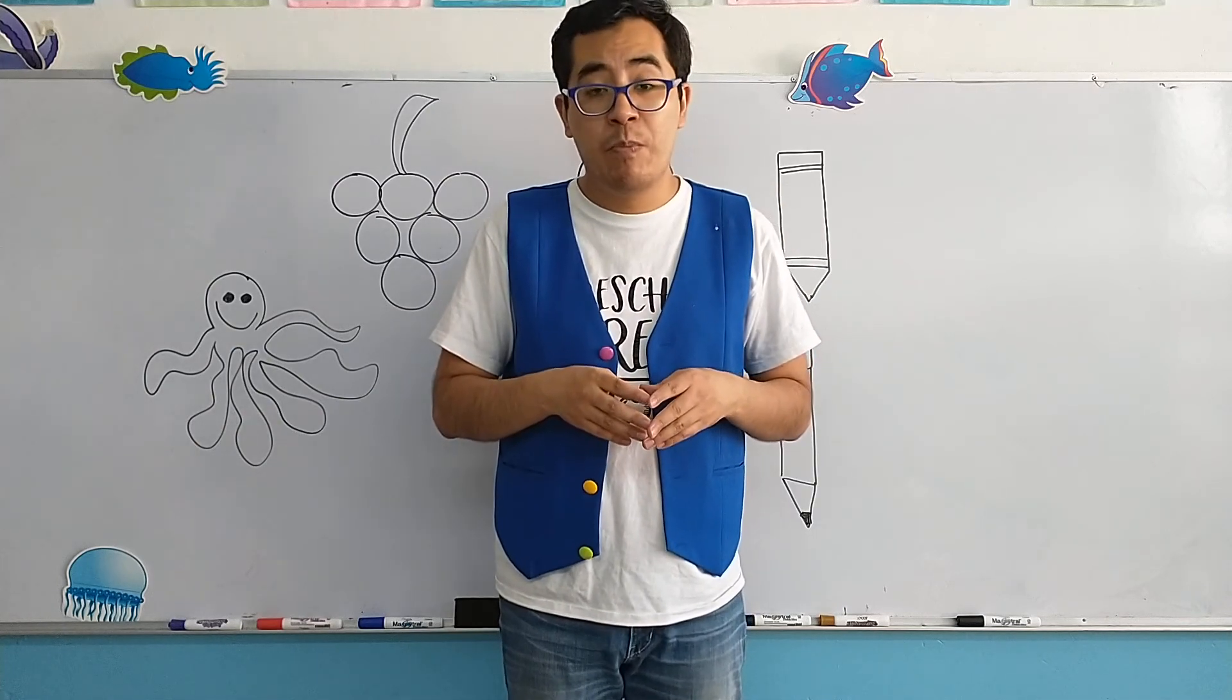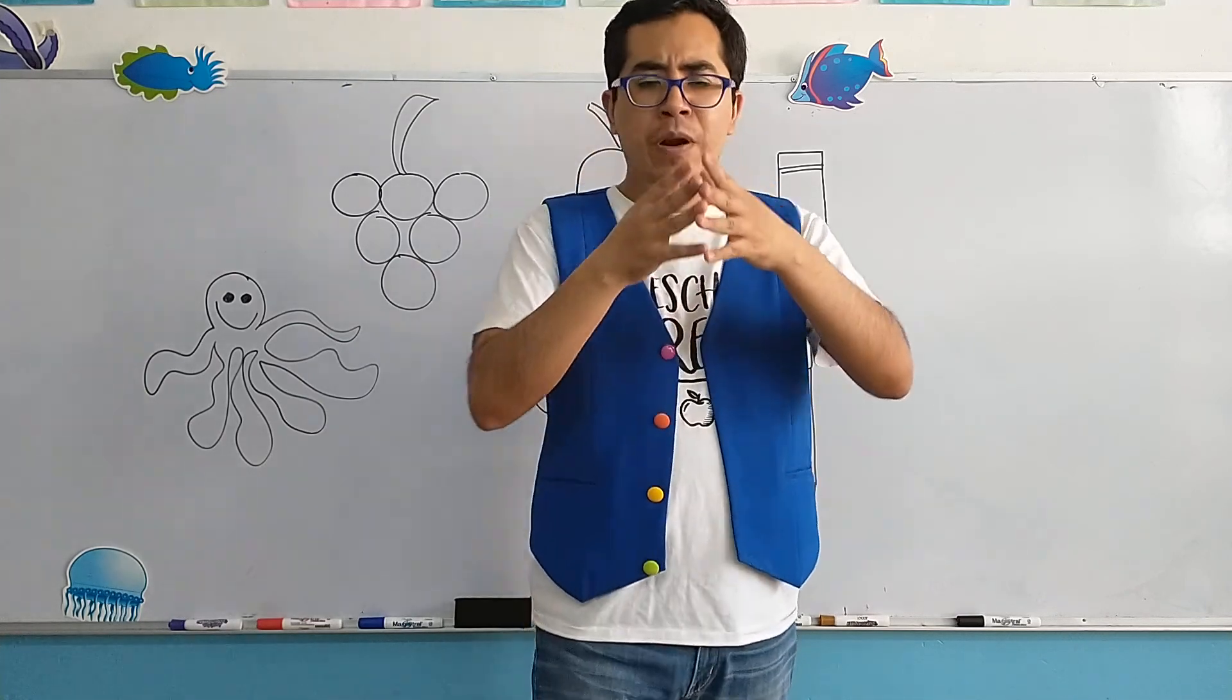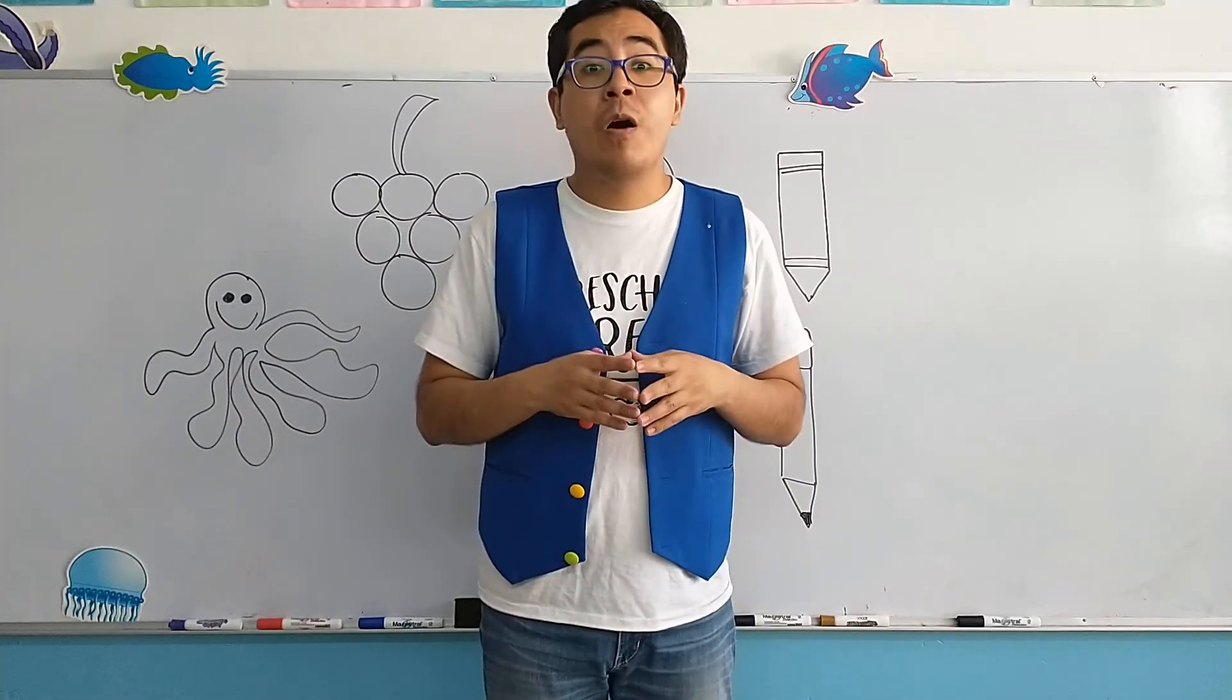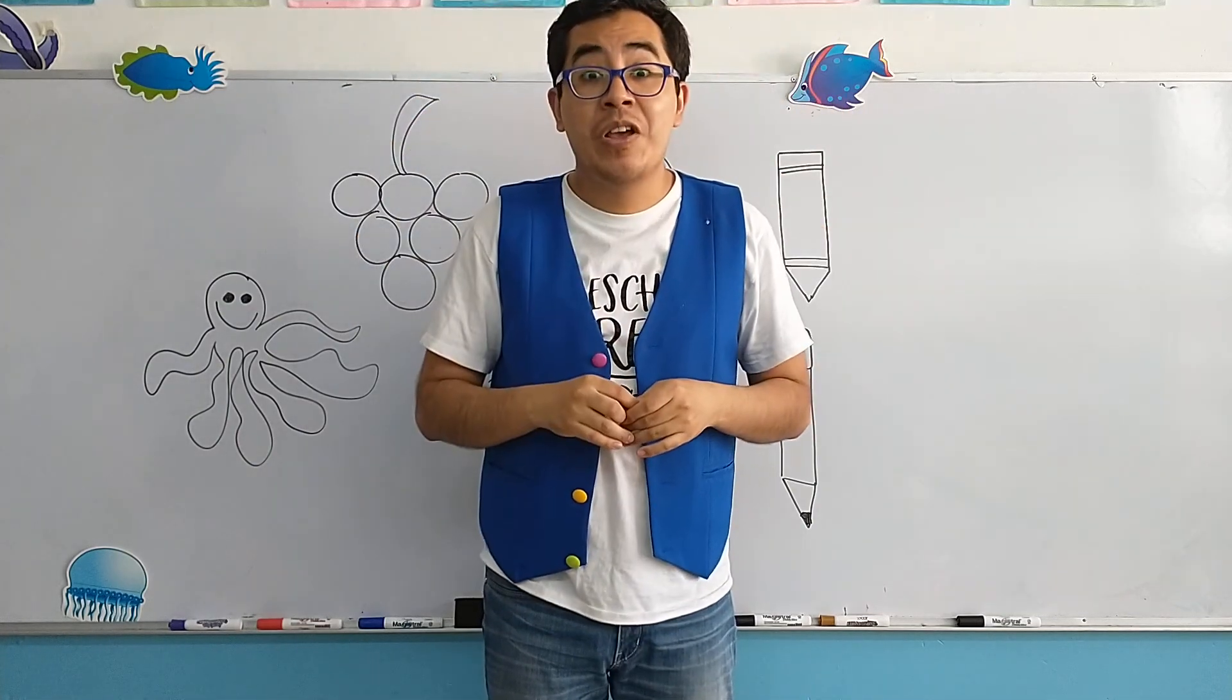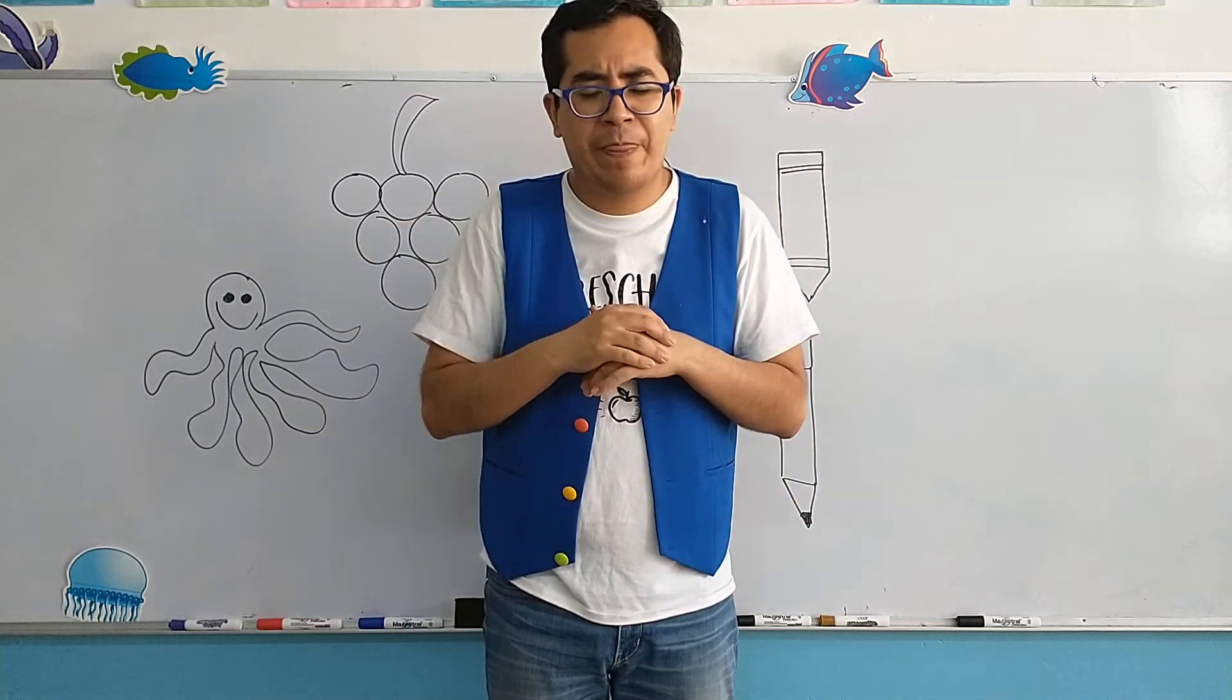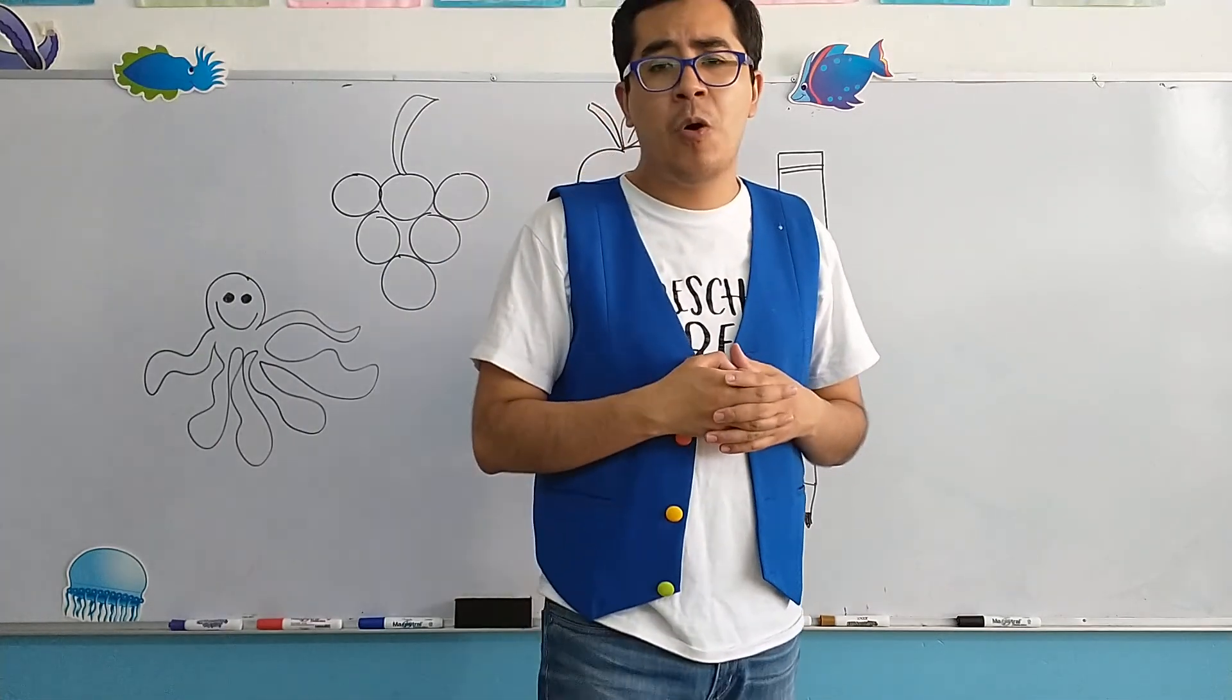Recuerde que el pulpo es un animal que vive en el mar y tiene ocho brazos. Another object that you remember with the letter O? The ogre. Very good. Remember the ogre, it's a big monster that is always angry. It's un monstruo alto que siempre está enojado.